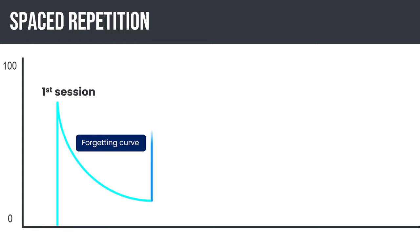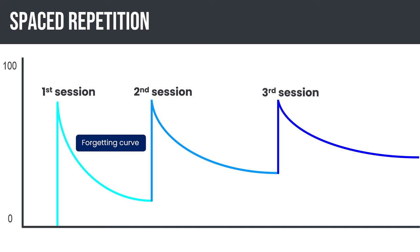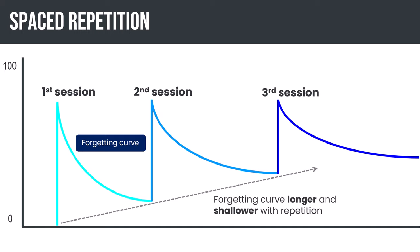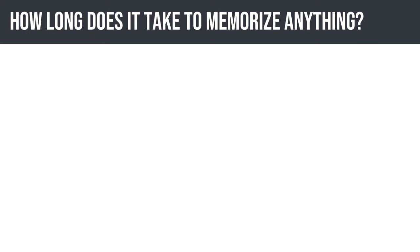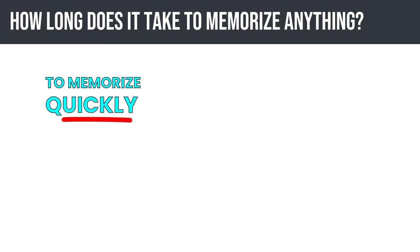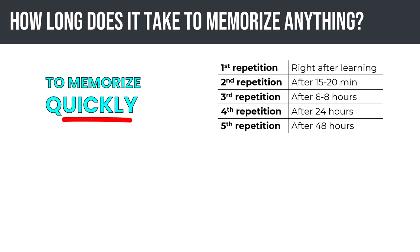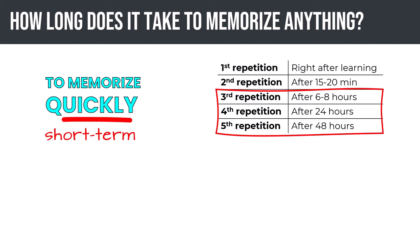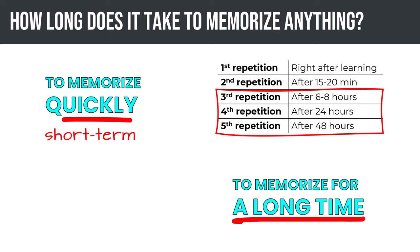Through repetition, with each repeating session, you're going to remember a bit more for a bit longer — the forgetting curve becomes a bit longer and a bit shallower. To memorize material quickly, you'll need to go through spaced repetition in shorter cycles, repeating right after learning and then a few minutes to a few hours apart. This is great if you're trying to remember content for the short term, potentially within a couple of days.